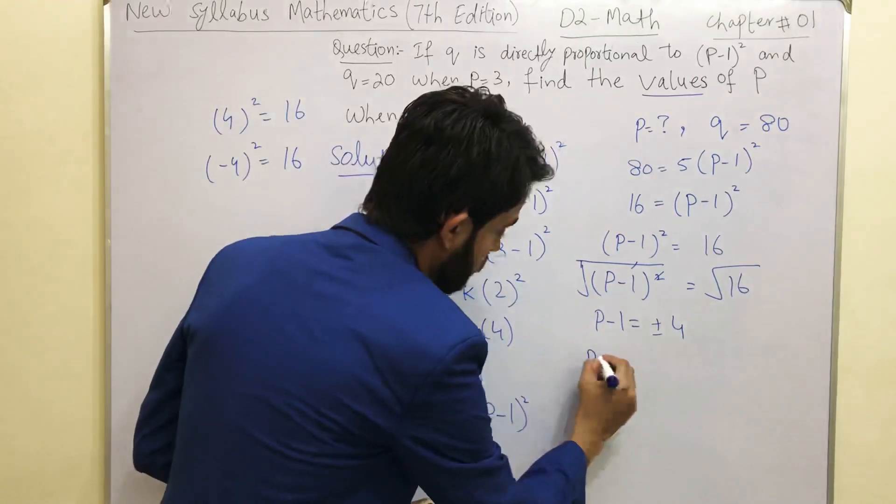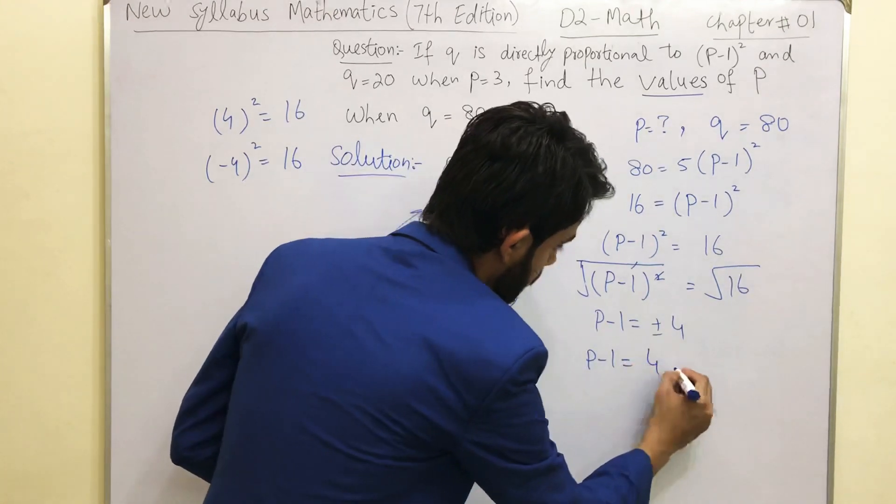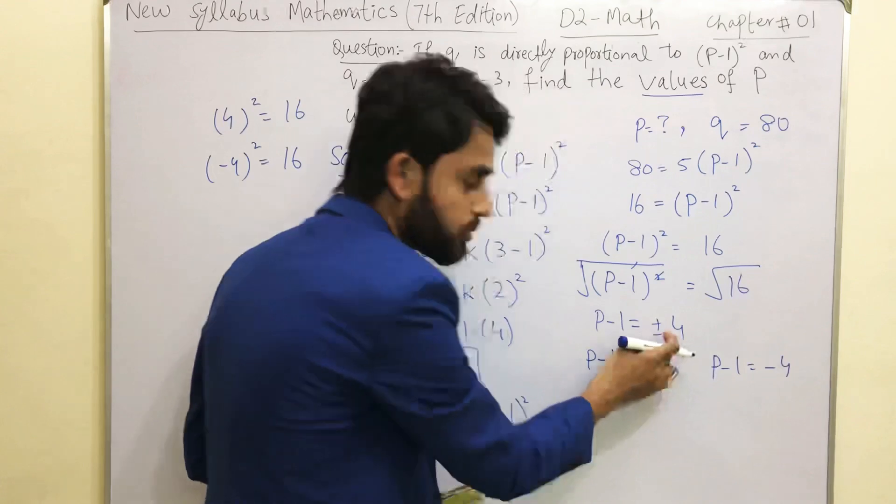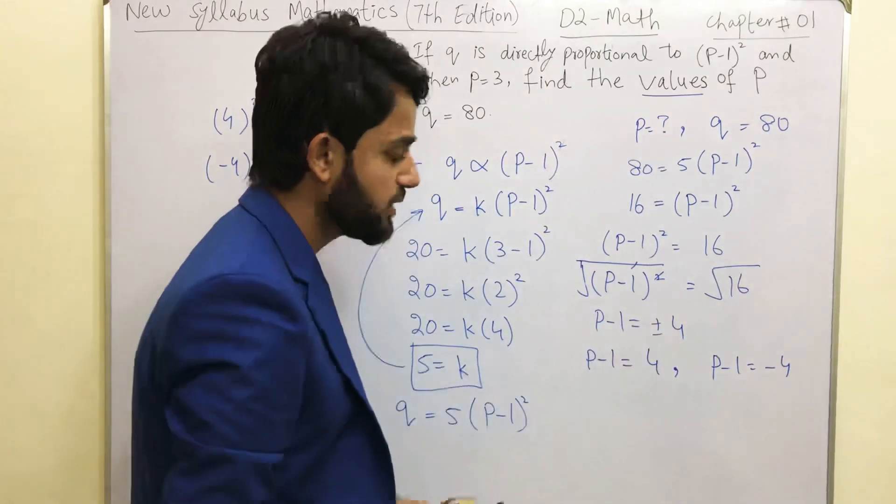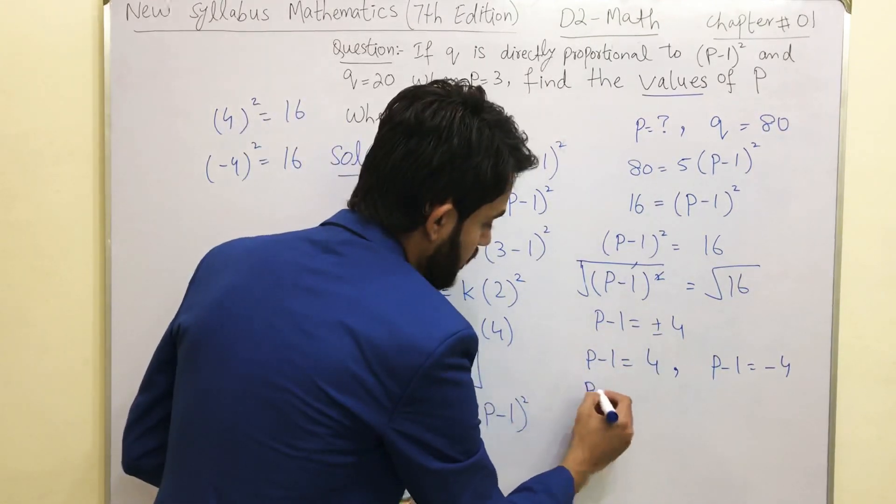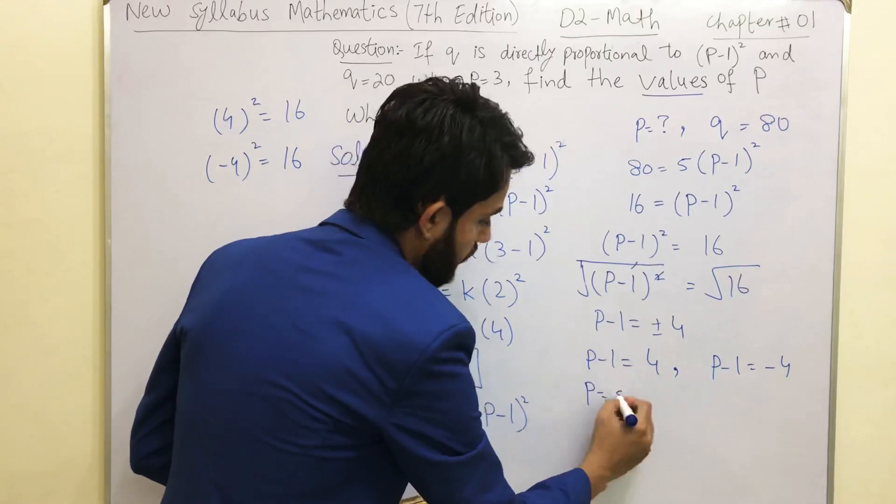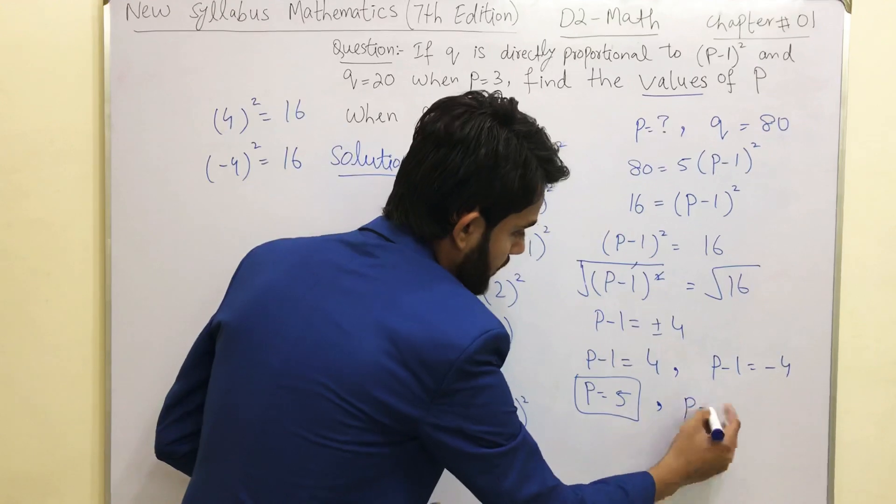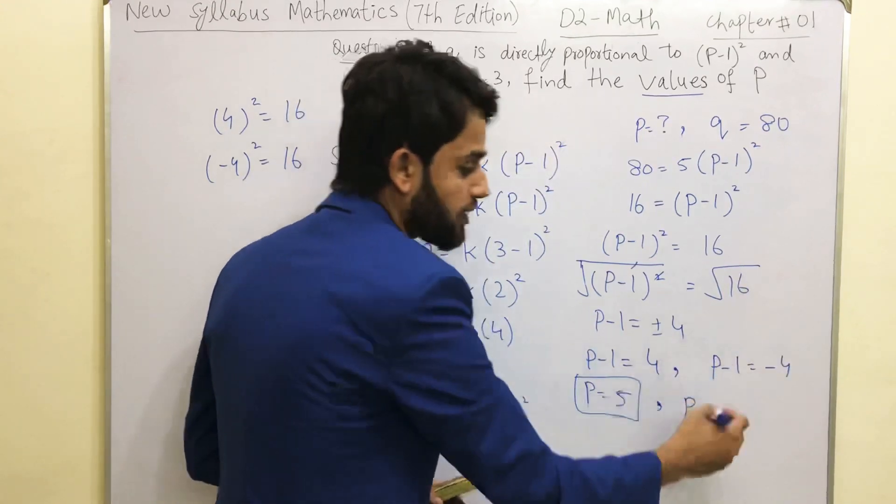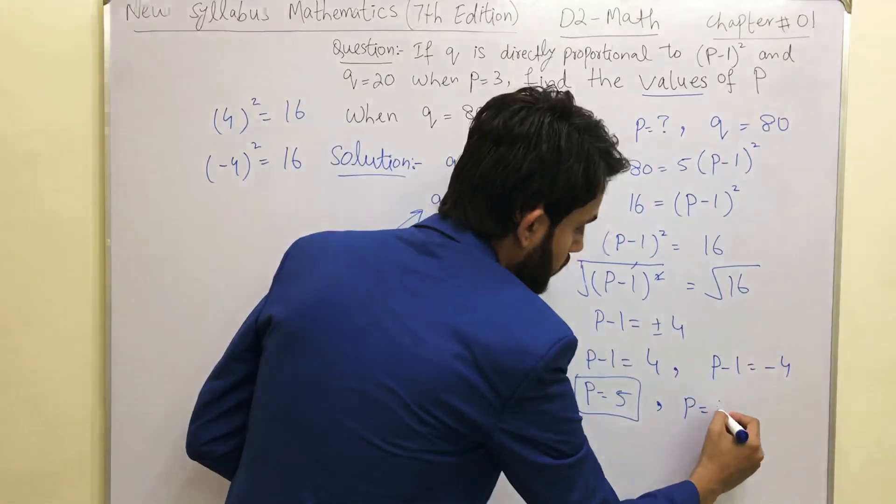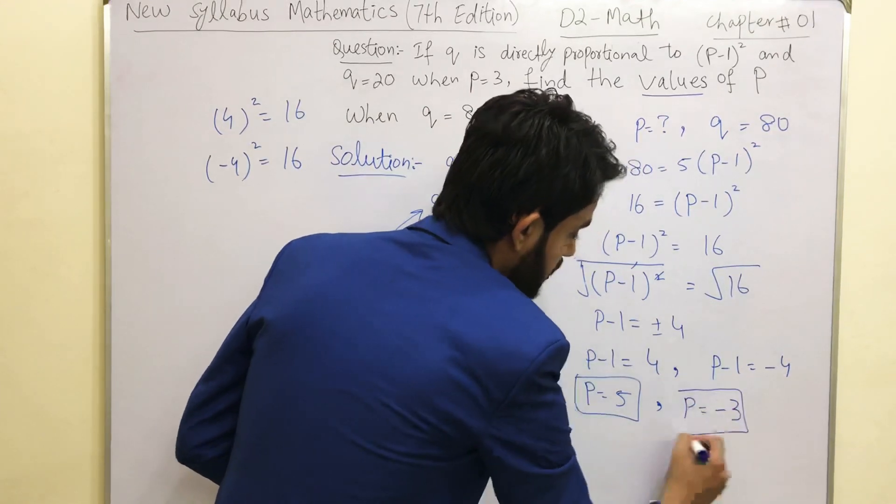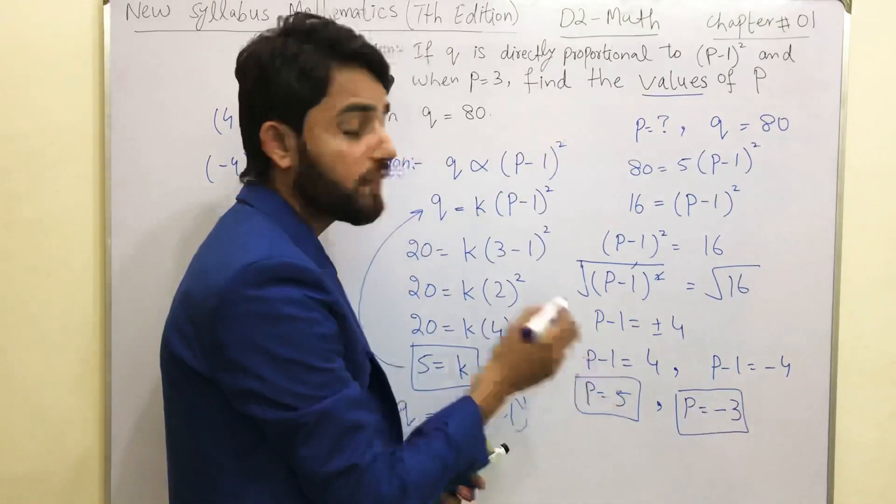So P-1 equals to 4, or P-1 equals to -4. Since we have the two values of plus minus 4, so we need to write this. So you can solve this equation: you will get 5 from here, and this minus will go over there: -4+1 is going to give you -3. So these are the two possible values for P.